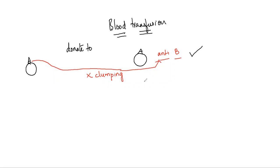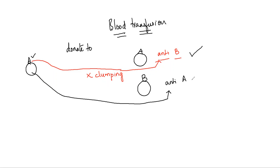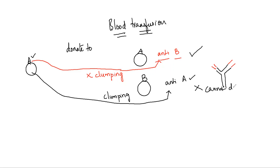Now let me take blood group B. A blood group B person is going to have antibody A. If this person donates blood to a blood group A person, the antigen A is matching with antibody A. The variable portion of the antibody — shaped like a Y — locks up with the antigen. The antigen A gets locked into antibody A, which leads to the clumping process. So a blood group A person cannot receive from blood group B.